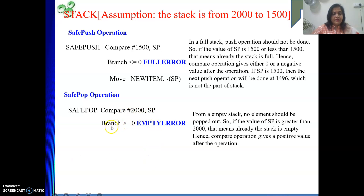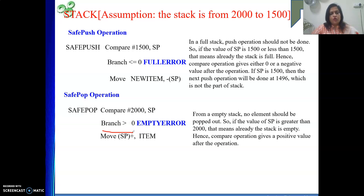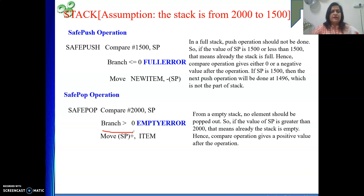If the value of SP is greater than 2000, the stack is empty, and the compare operation gives a positive result. If so, jump to the empty error label to give the user a proper message — that instruction tells you that you are trying to perform a pop from an empty stack. If the branch-greater-than-0 condition is not true, we are at the correct position and can perform the pop. We do: move SP+, item — the element is taken from SP into the memory location item, then SP is incremented to the next location, since SP always points to the top element.